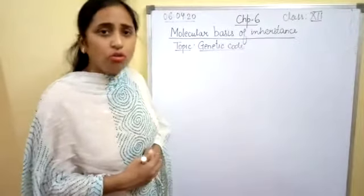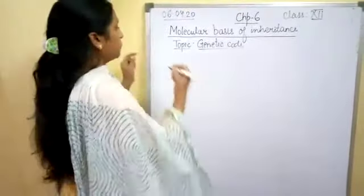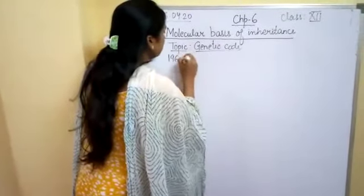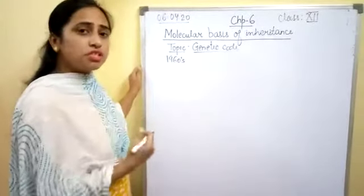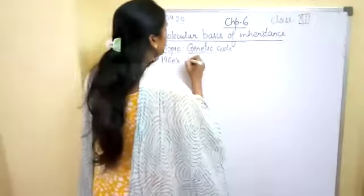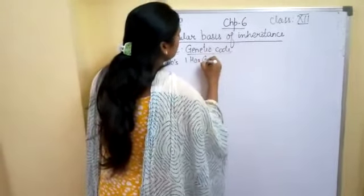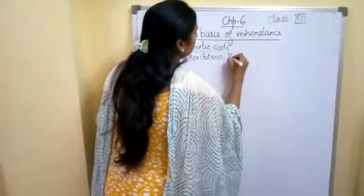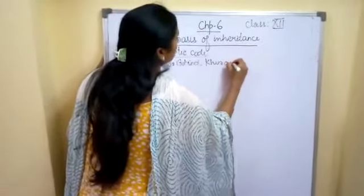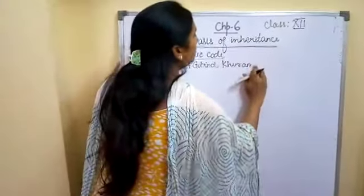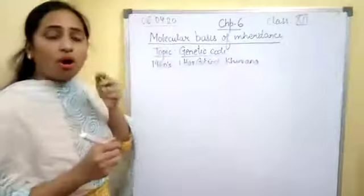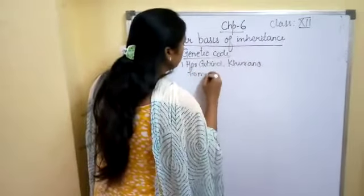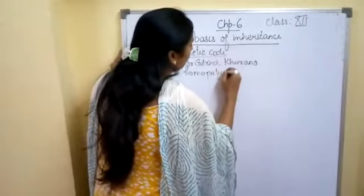So students, how do we get to know there is triplet codon? In the year 1960s, three discoveries or three researches were being made by three scientists. First scientist was Hargobind Khurana. He designed a chemical method for the synthesis of RNA molecule. That means he had discovered about homopolymer and copolymer.